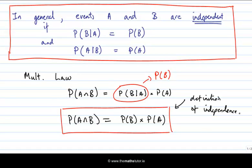So what have we done here? We started with an intuitive idea — independence means the two events don't affect each other, like the coin flip and the die roll. That tells us something about conditional probabilities: if A doesn't affect B, then P(B|A) should equal P(B). Then using the multiplication law, we get the definition: P(A and B) equals P(A) times P(B). This is the standard mathematical definition of independence in probability theory — it means the probabilities of A, B, and A and B are related by this equation.